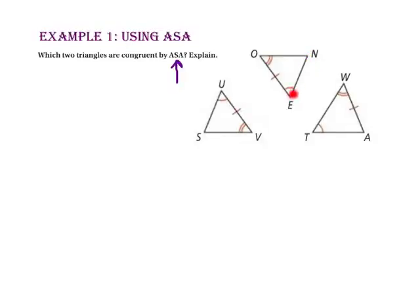In triangle-ONE, we have angle-E, side-EO, and angle-O — side-EO is included between the two angles. In triangle-TWA, we have two angles, but side-WA is not included between angles-T and W. Therefore, this is not angle-side-angle. The two triangles we can prove congruent by angle-side-angle are triangle-SUV and triangle-NEO.